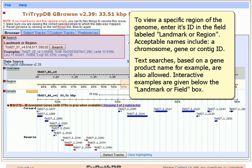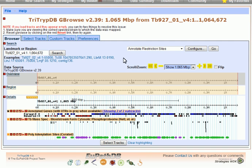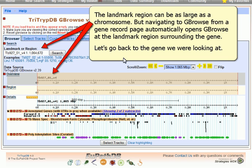To view a specific region of the genome, enter its ID in the field labeled Landmark or Region. Acceptable names include a chromosome, gene, or contig ID. Text searches based on a gene product name, for example, are also allowed. Interactive examples are given below the Landmark or Region field. The Landmark region can be as large as a chromosome, but navigating to GBrowse from a gene record page automatically opens GBrowse at the Landmark region surrounding the gene.